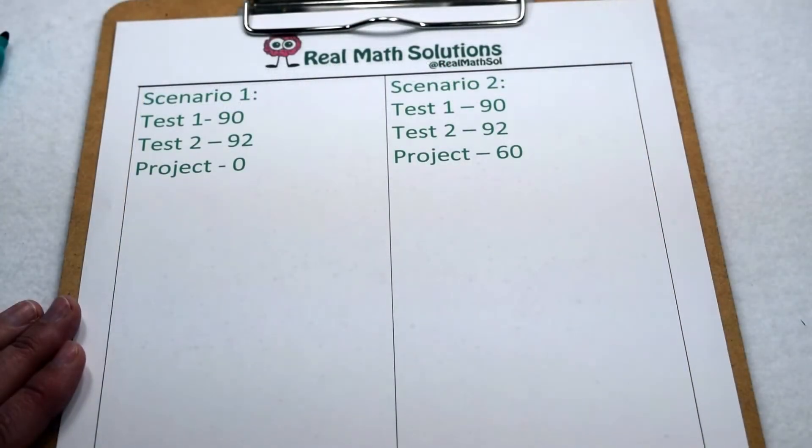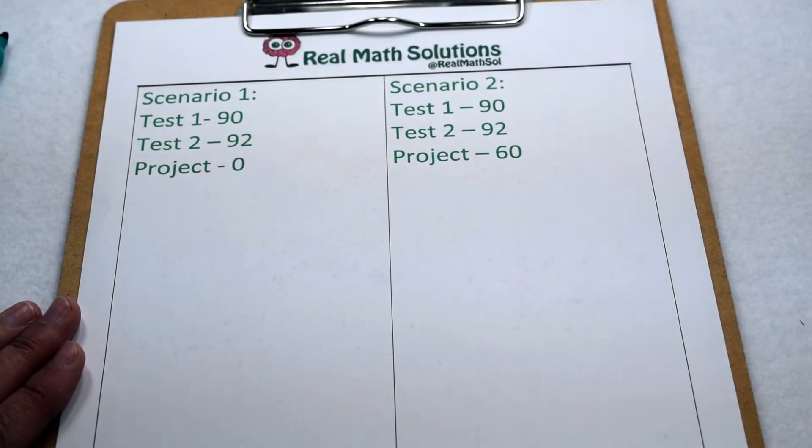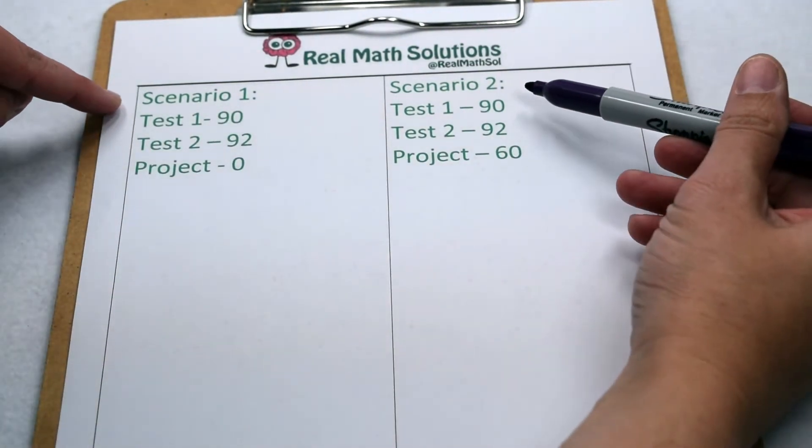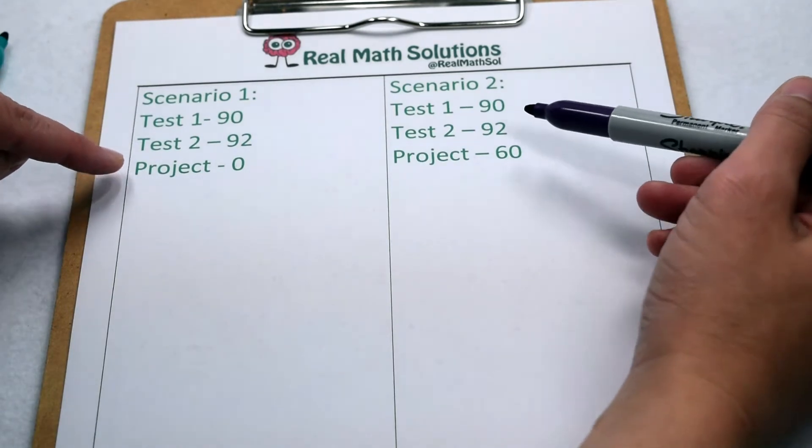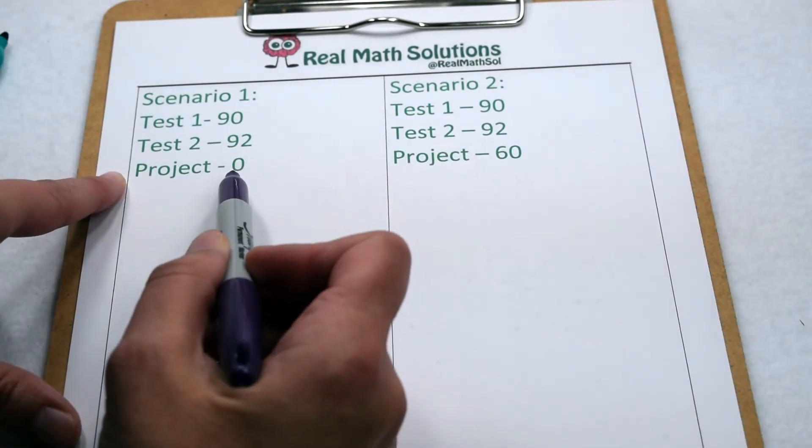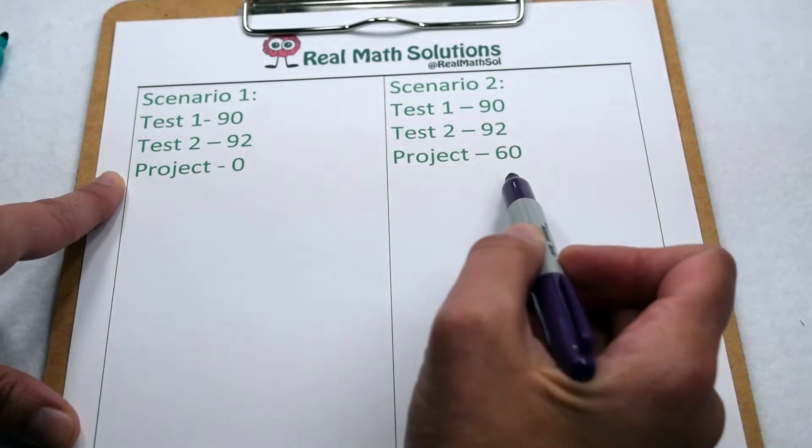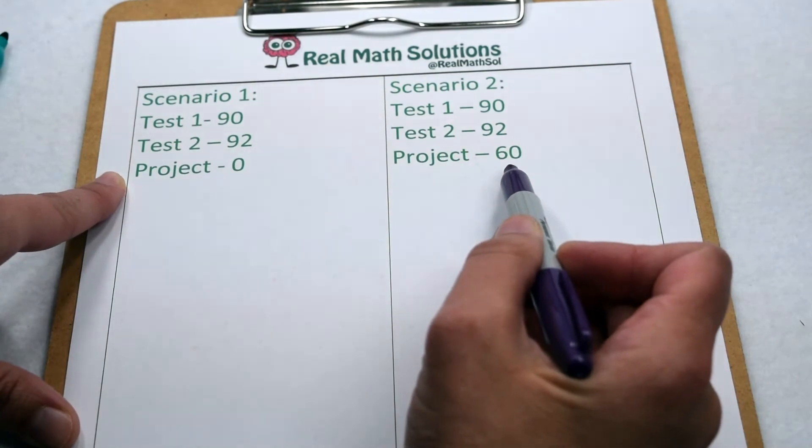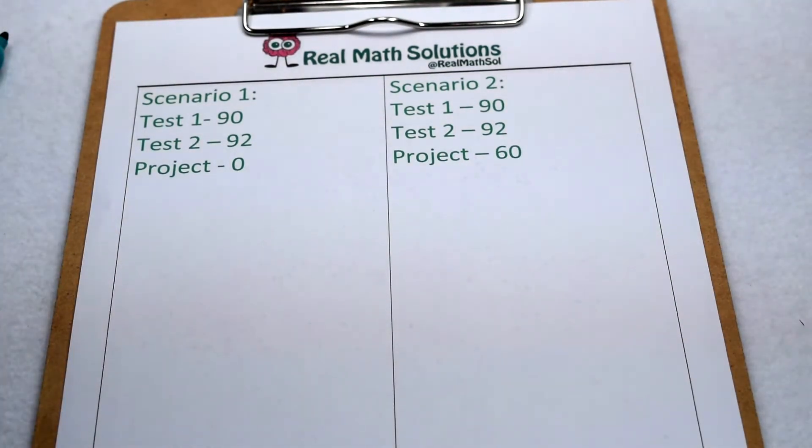Grades are a common place where we use mean as our measure of central tendency. Let's look at two different scenarios. Both have your final average being determined by two tests and a project. In one scenario, you never turn the project in. In the other scenario, you turn it in late and don't do a very good job on it. How is that going to affect your class average?